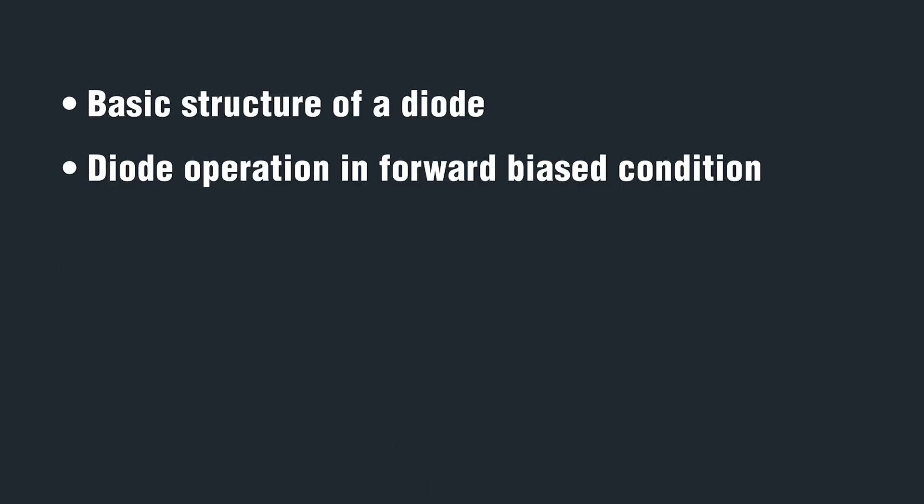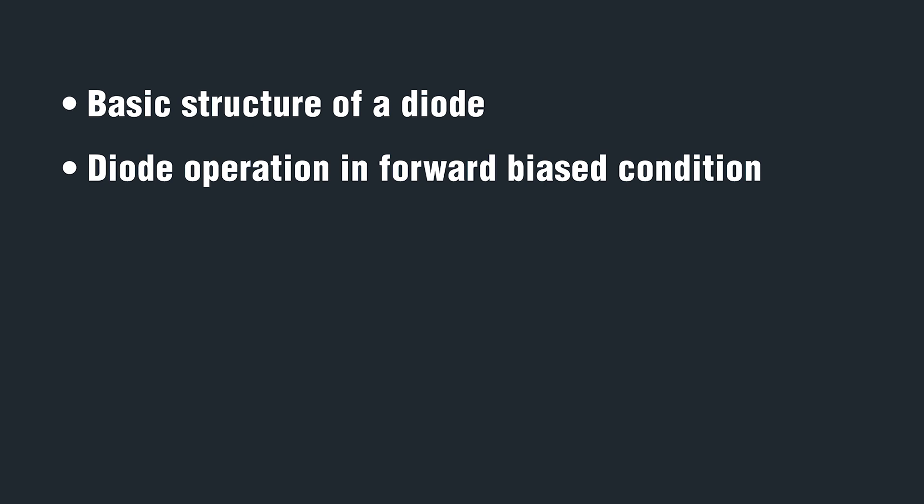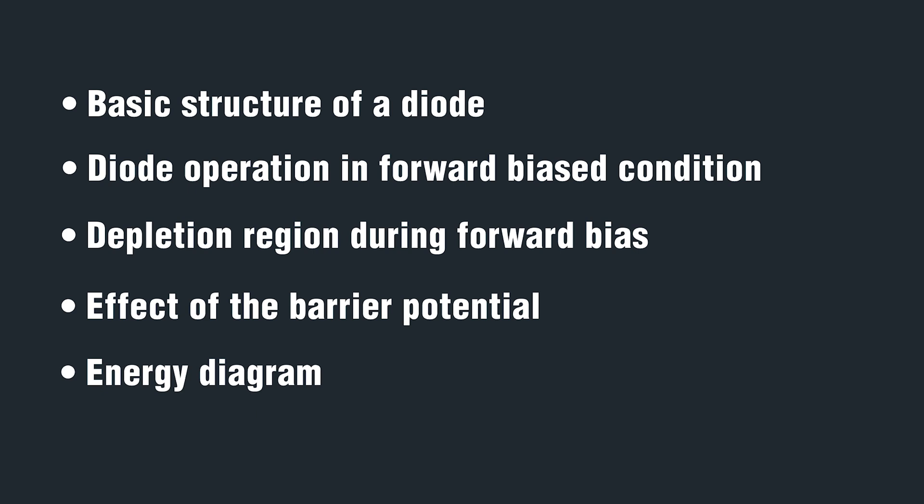In this video, we discussed the basic structure of a diode and its operation in the forward-biased condition. We also discussed what happens to the depletion region during forward bias, the effect of the barrier potential, and the energy diagram.